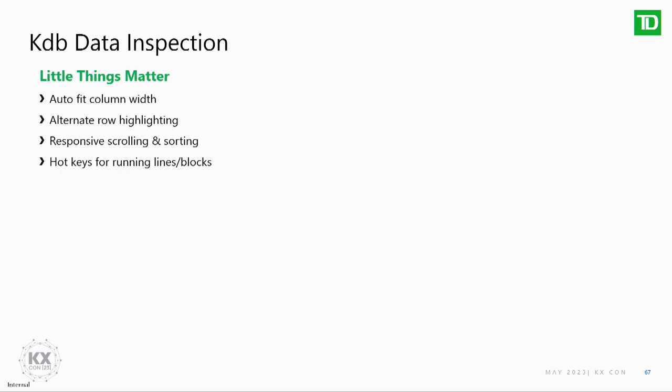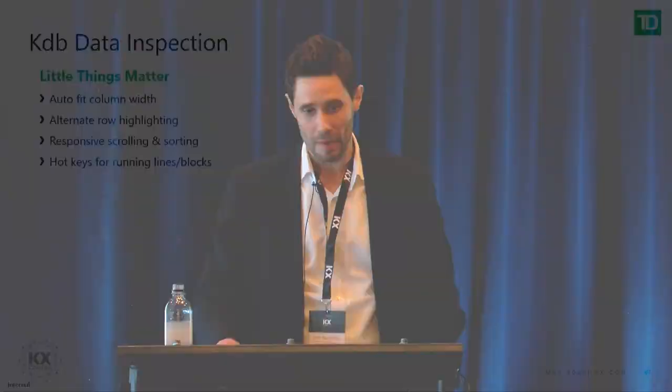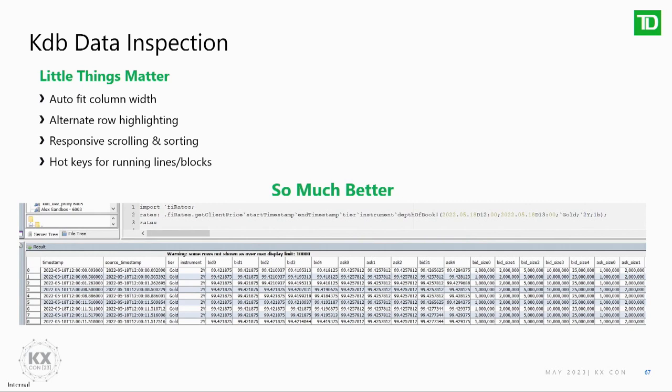In KDB, these little things matter: auto-fitting the column width, alternate row highlighting, responsive scrolling and sorting, and hotkeys for running lines and sections. Even going back to Studio for KDB+, it was very easy to use. Products like TimeStored, QPad, Studio for KDB+, and KDB Insights all have tables that are easy to use — that is so important. Ideally, if these are integrated more into something like VS Code, that's where things really start to get more powerful and we start to mimic the developer experience you get in something like Java.